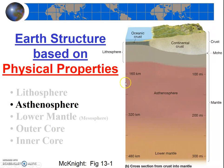The next layer down is called the asthenosphere. This is all mantle material, so it's peridotite. But the rocks of the asthenosphere are much weaker than the rocks of the lithosphere. 'Astheno' is a Greek root which means without strength, or weak. This layer is not all liquid, but there are pockets of magma, and in general the rocks are much more easily deformed than rocks in the lithosphere.